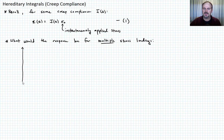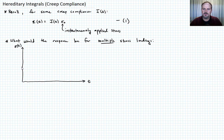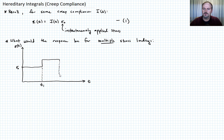Here's a graph with a stress axis and a time axis — sigma of t. Let's start with what we already know. Let's jump to some stress, call it sigma naught, and hold that for some amount of time. We'll call this first time t1. At t1, we're going to jump the stress to some new value and hold it up to time t2. Then we're going to jump up the stress again. This first jump is delta sigma 1, and this second jump we'll call delta sigma 2.